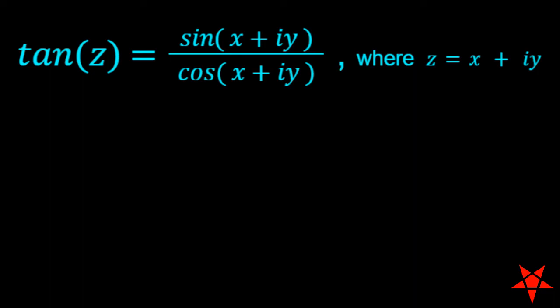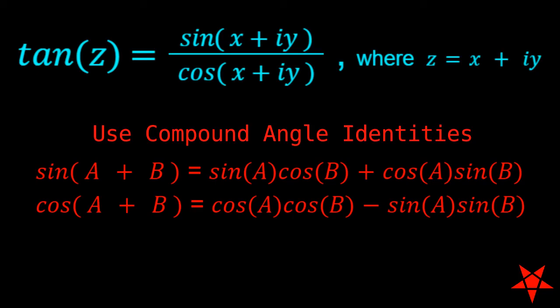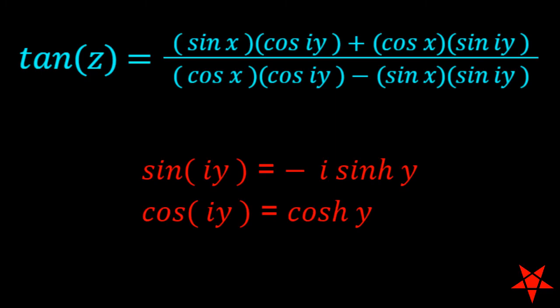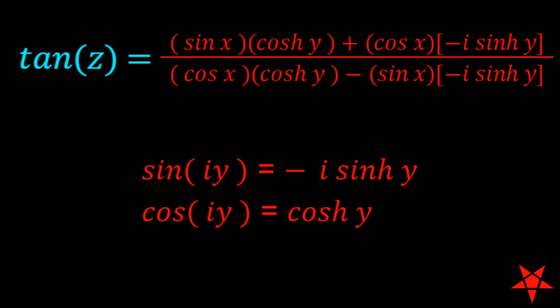Using our compound angle identities, we can identify the real and imaginary components of tangent of z. But the compound identities only get us part of the way, and we need to use identities involving hyperbolic functions in order to pull the imaginary numbers outside of the arguments of the trigonometric functions.